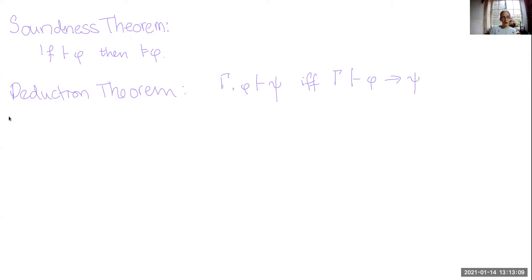Instead of proving the soundness theorem directly, we're going to prove this intervening lemma: if from some set of formulas Γ we can prove φ using our proof system, then every truth value assignment that makes all members of Γ true will also make φ true. The lemma differs from the soundness theorem by having Γ on the left-hand side of both the single turnstile and the double turnstile.